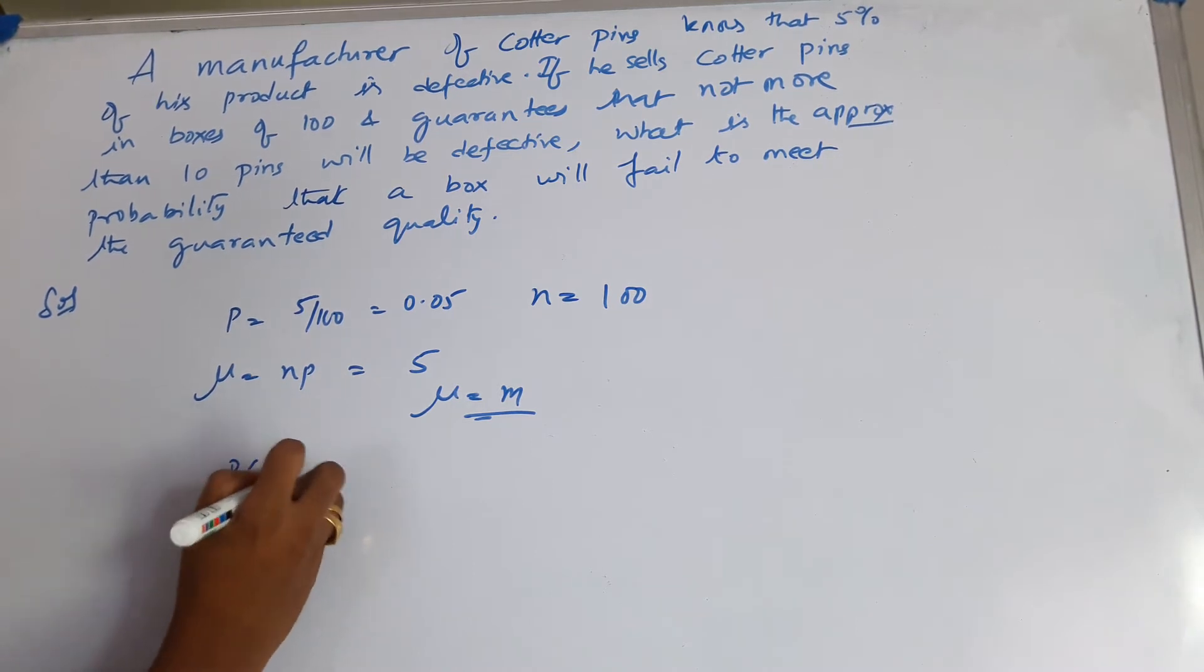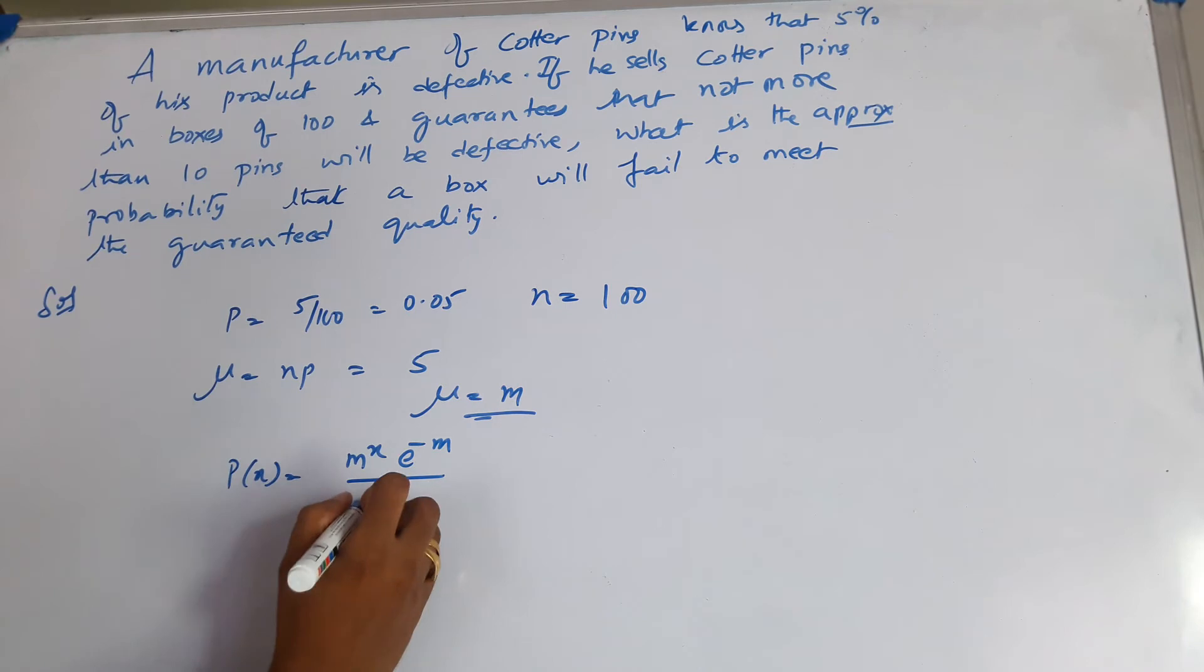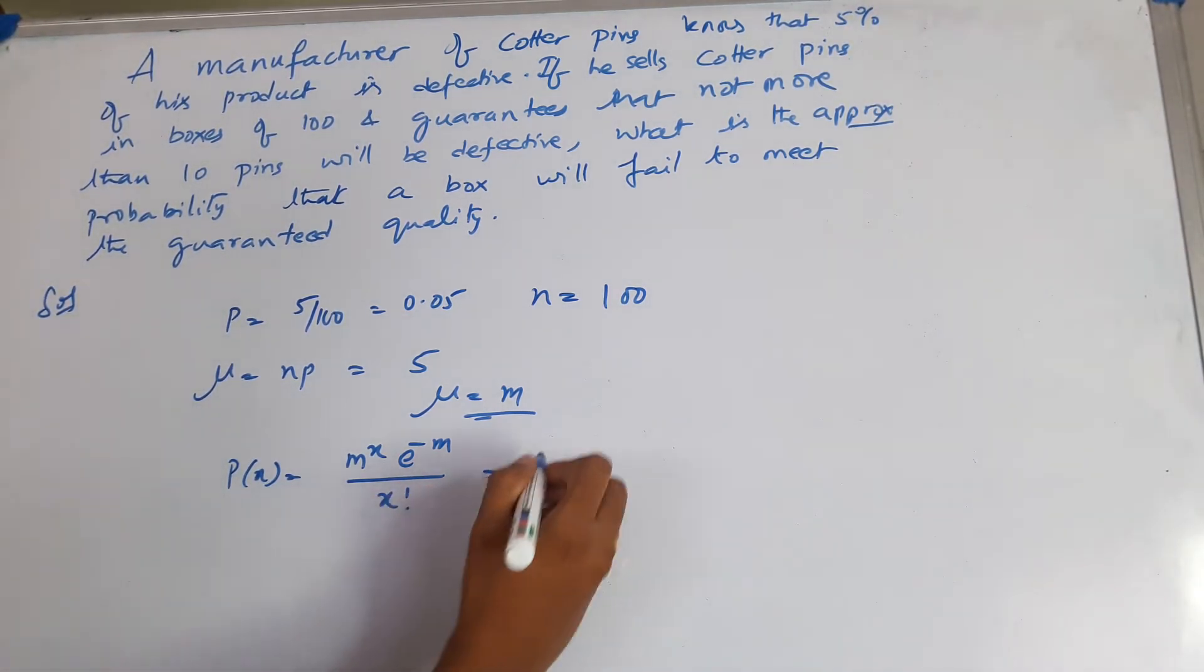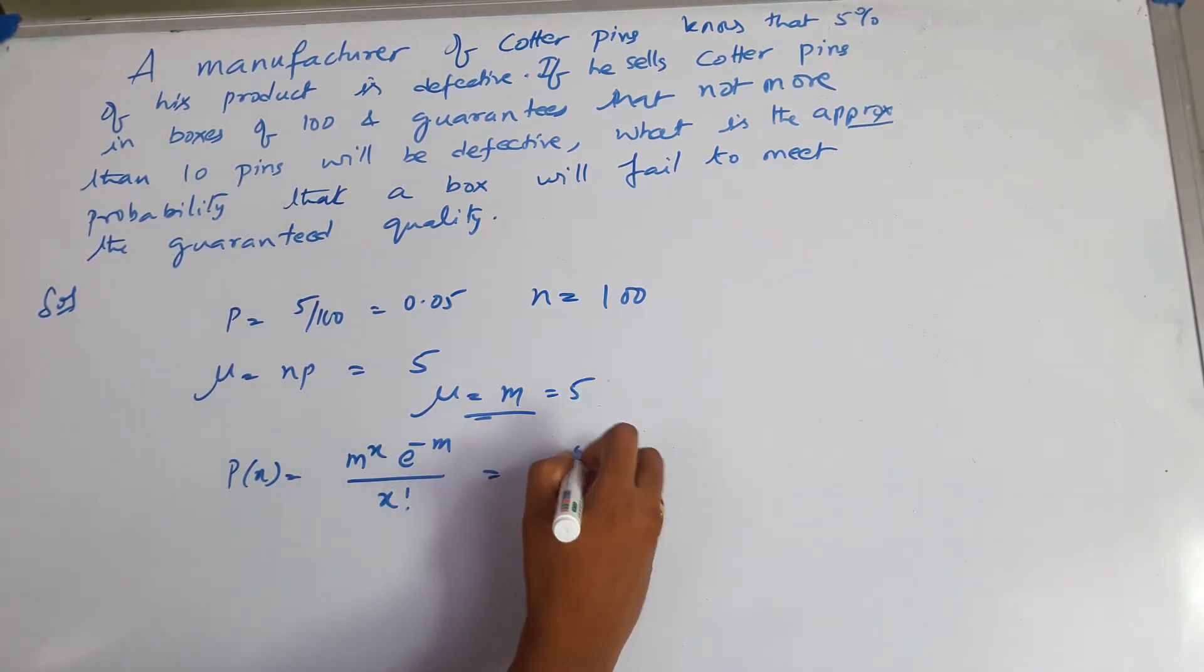So P(X) equals M to the power X, e to the power of minus M, divided by X factorial. With M being 5, this is 5 to the power X, e to the power of minus 5, divided by X factorial.